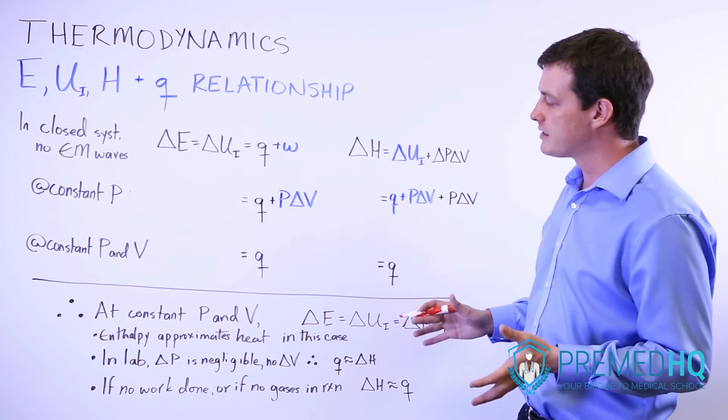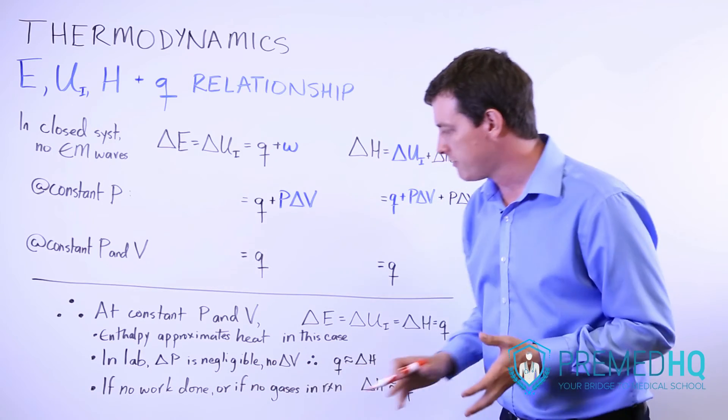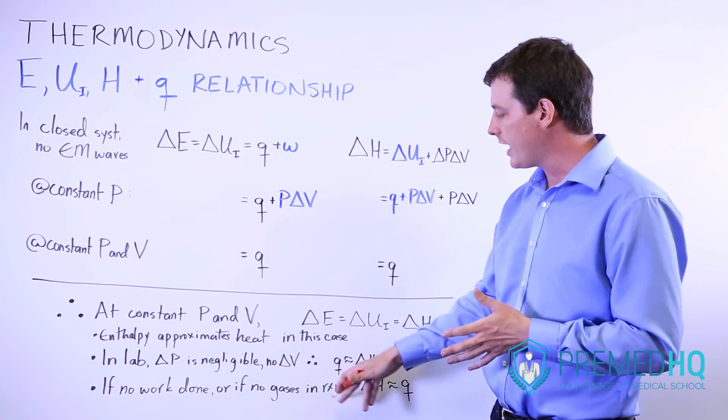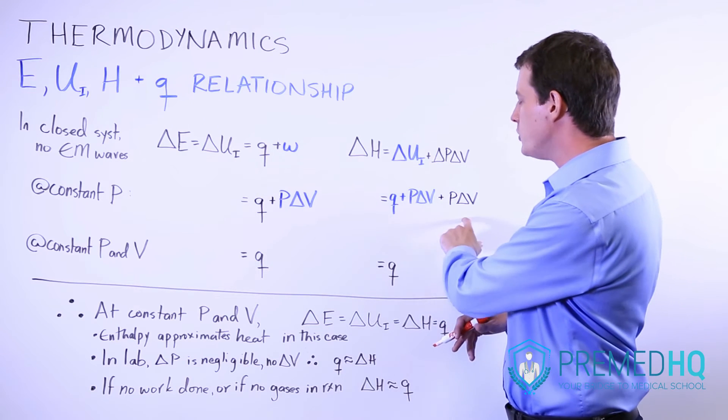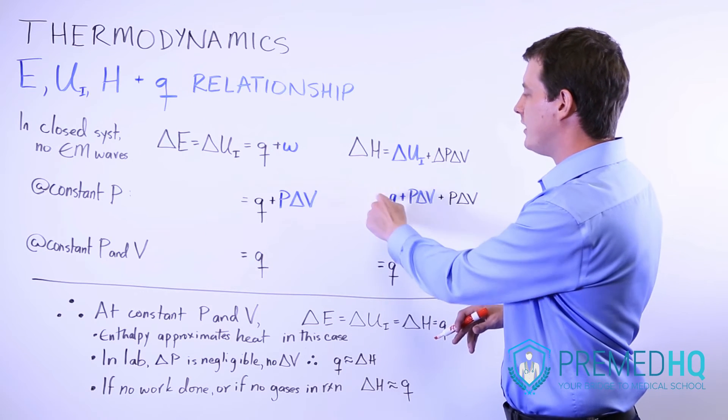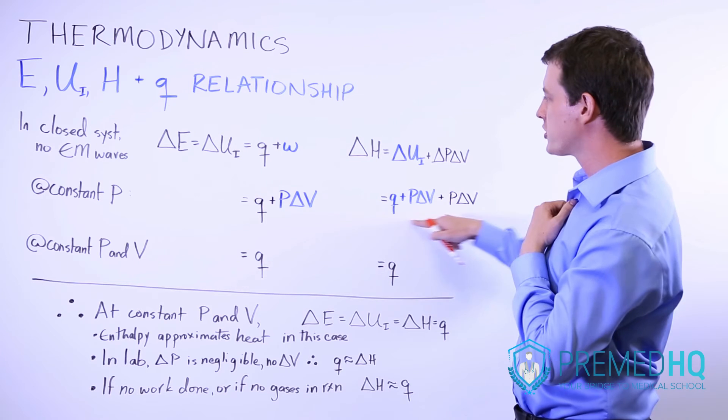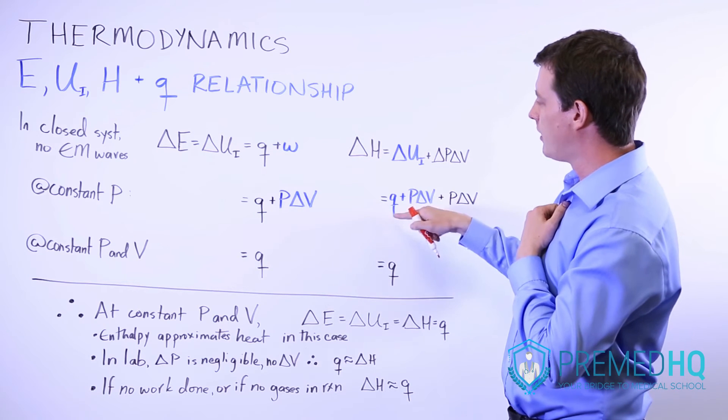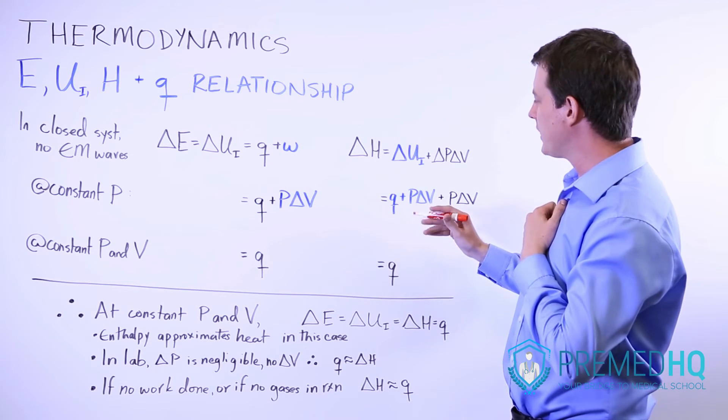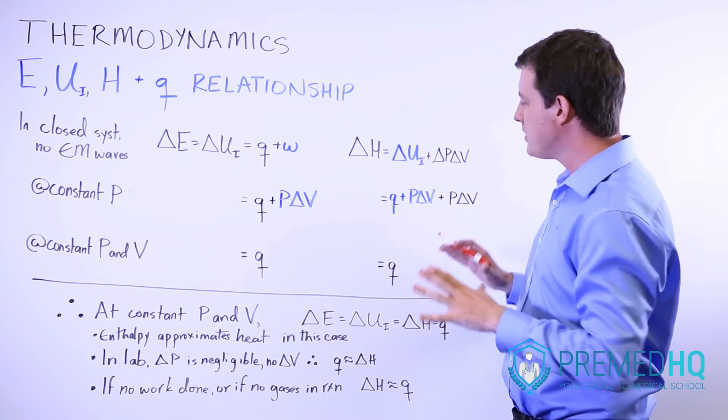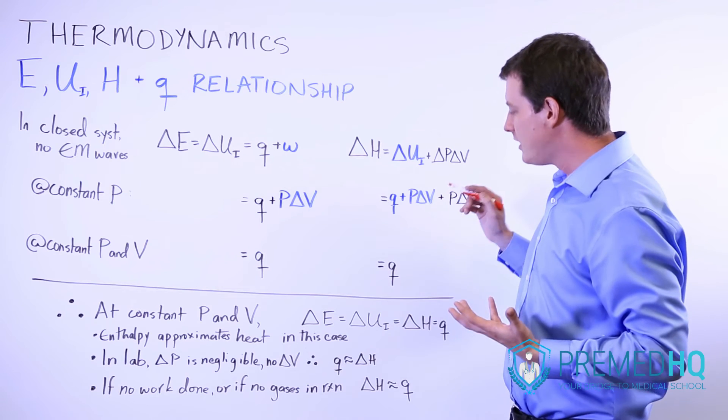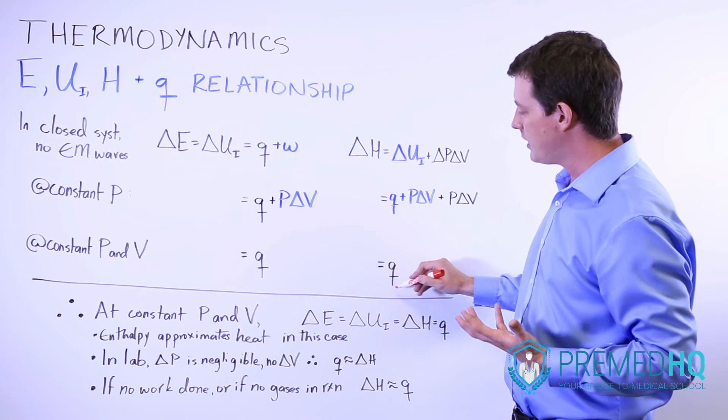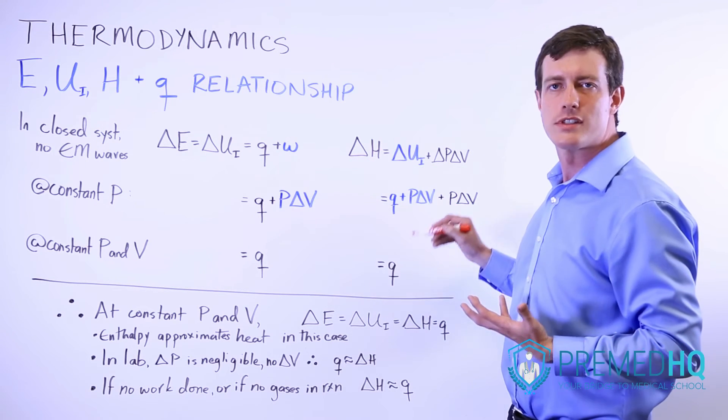Another way we can do this is if no work is being performed, or if there are no gases in the reaction. Because this PV work is usually the only thing that makes this whole expression different from just the q expression. So if you have no PV work being performed, or if you have no gases involved, then you can always assume that heat is equal to enthalpy.